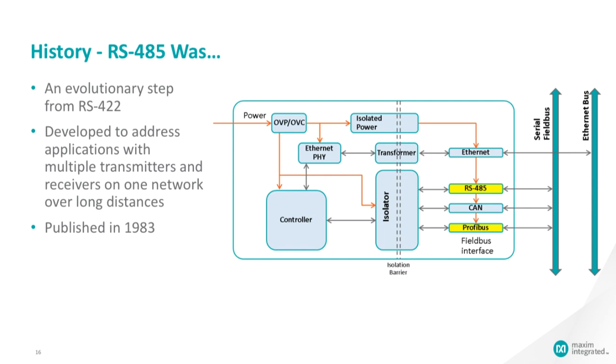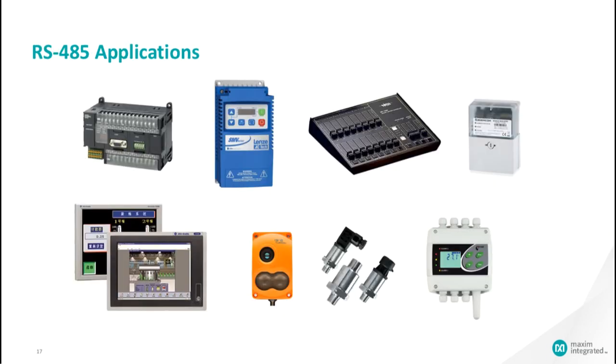This standard was published in 1983. The noise-immunity and multi-drop capability make RS-485 the serial connection of choice in industrial applications requiring many distributed devices networked to a PC or other controller for data collection, human-machine interface, or other operations. One can find RS-485 in many applications, such as PLCs, industrial sensors, building automation, etc.